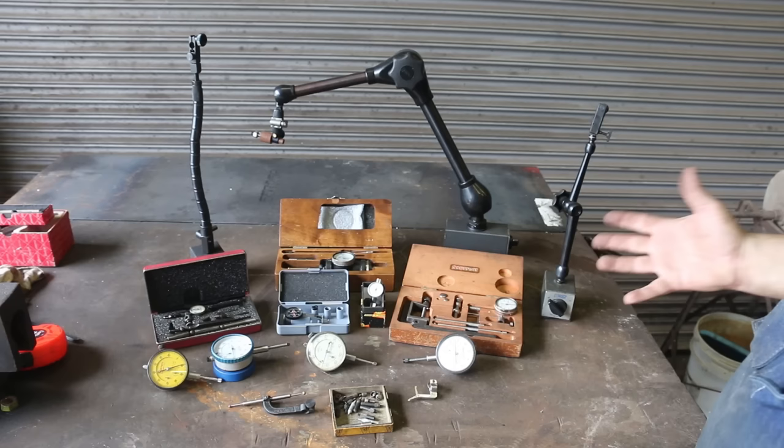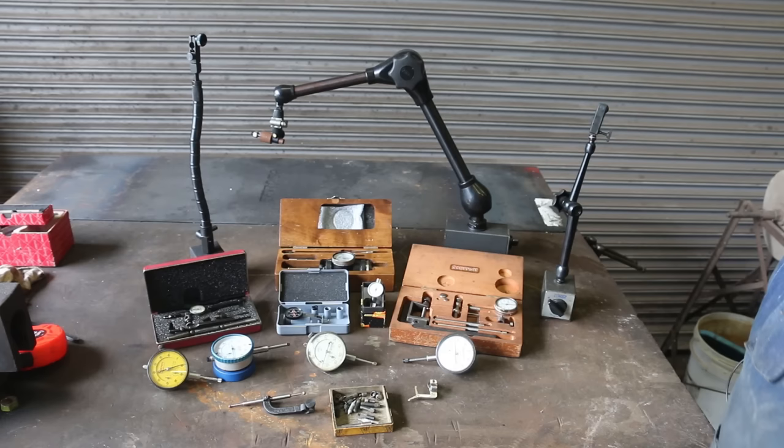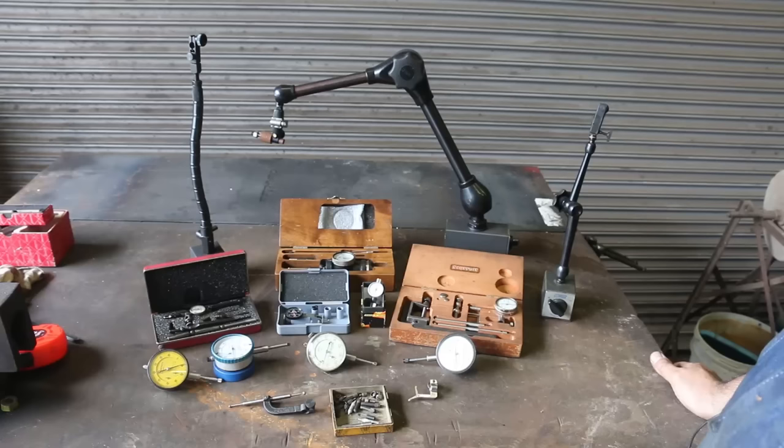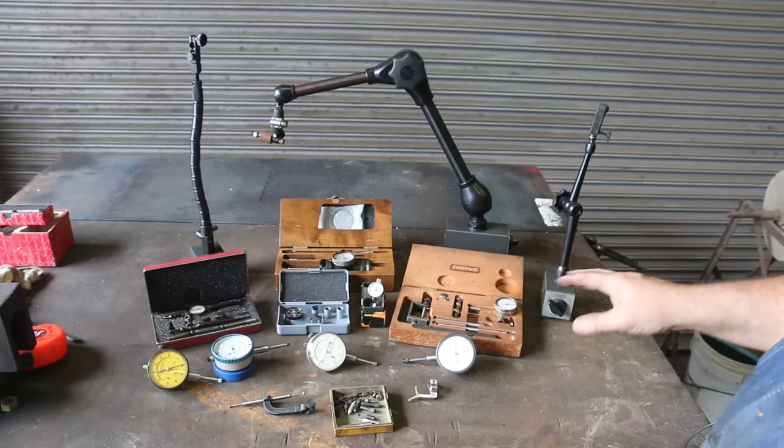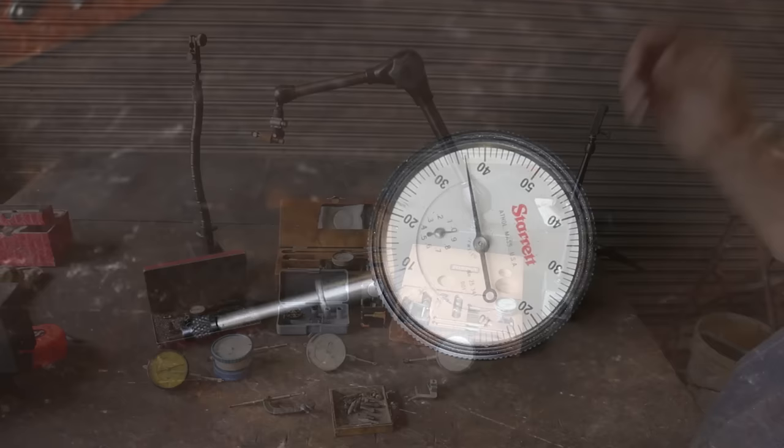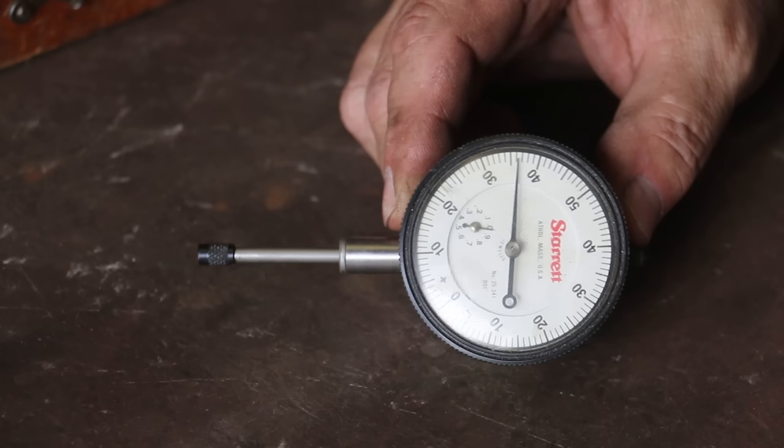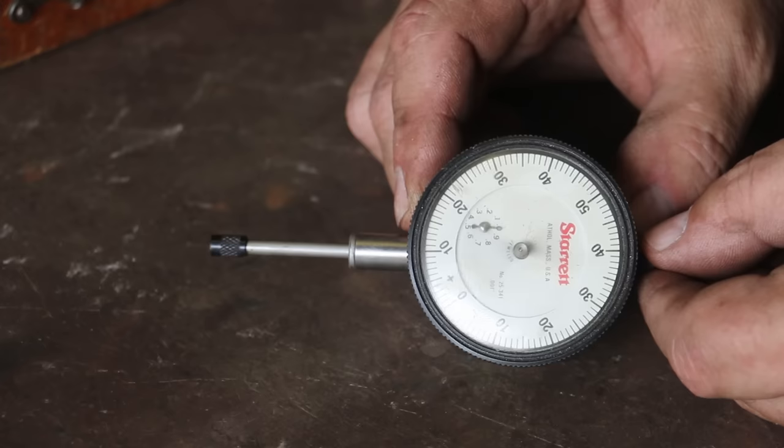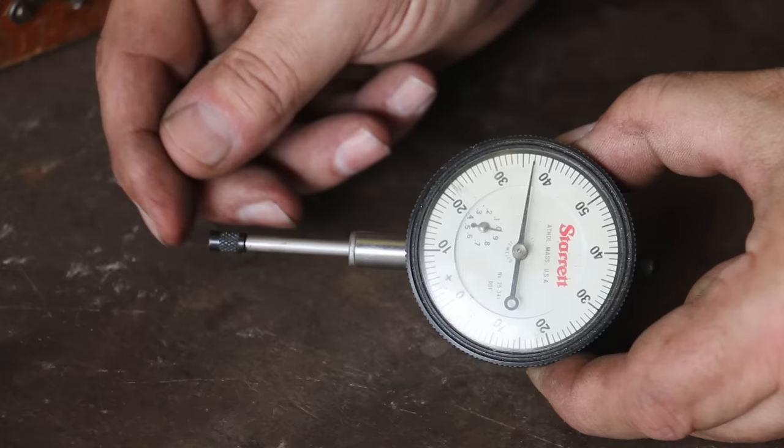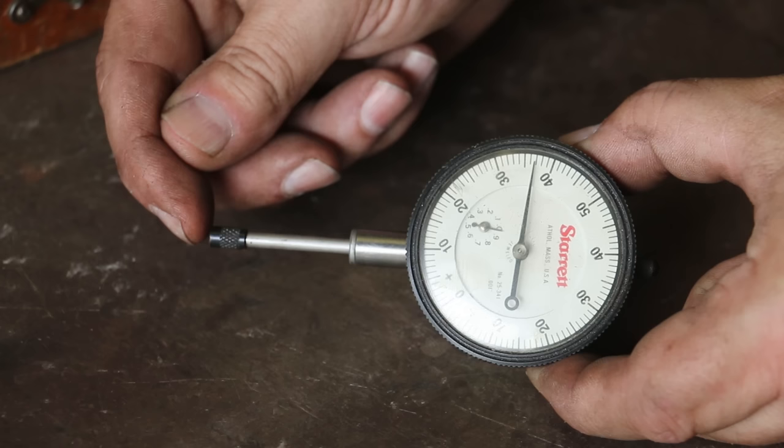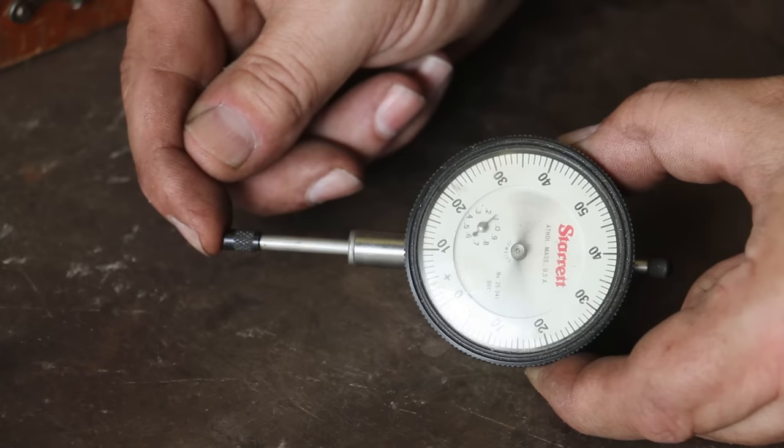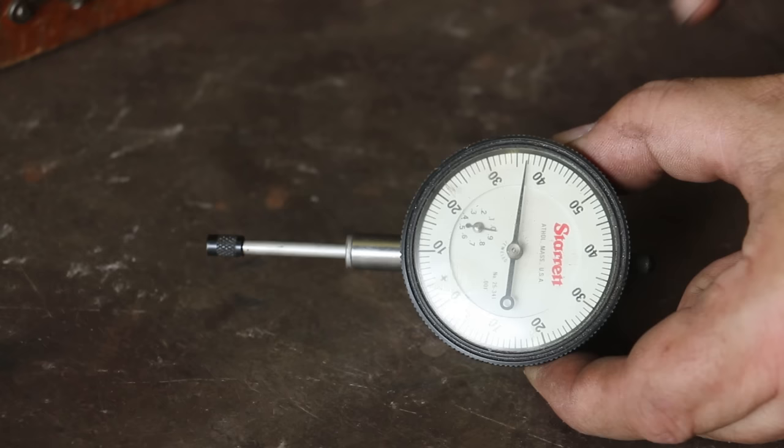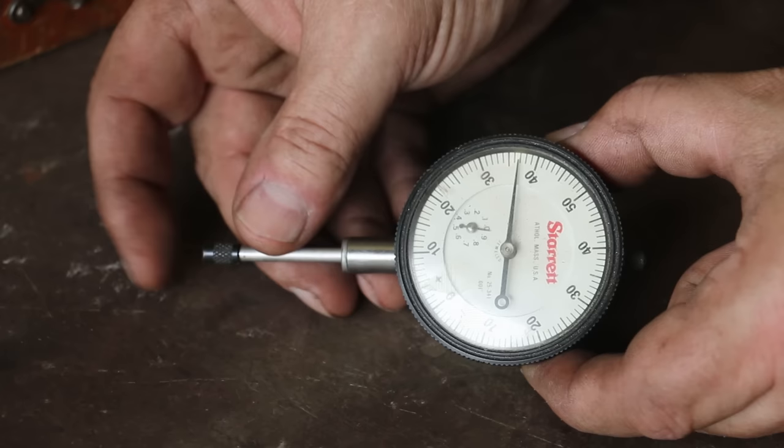So I'm going to start out with just probably your most basic type of dial indicator. There's a stem here. This one has a one inch range. There's some gears and stuff that basically as this moves in, you can see the dial moving and it gives you a very accurate measurement as to how far that dial is moving. And this one is in thousandths of an inch. So each one of the lines on here is one one thousandth of an inch.